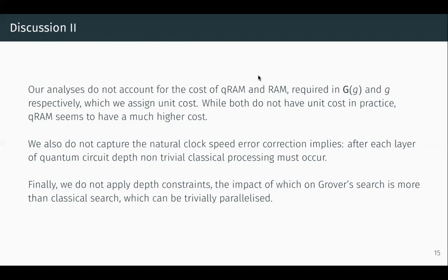In the surface code cost model, you have to measure a certain number of physical qubits per layer of quantum circuit depth and perform some classical computation on those measurements before reinitializing them. The time that this classical computation takes sets the clock speed for progression through the quantum circuit, and our model doesn't capture that at all. Finally, we don't apply any depth constraints to our circuit. A depth constraint says the depth of your circuit cannot exceed some bound — in the NIST post-quantum standardization process, the most lenient depth constraint suggested is 2^96. Classical search can be trivially parallelized under depth constraints, but it's known that Grover's search doesn't parallelize as well, so this is another factor that would lessen quantum advantage.